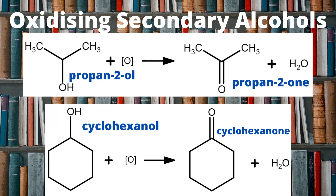Just below the propan-2-ol reacting to form propan-2-one, you can see a cyclic example where cyclohexanol is reacting to form cyclohexanone. Don't be thrown off by the fact that it's cyclic — don't change the ring, leave the ring alone, just change the functional group as described previously. The reaction conditions for oxidizing a secondary alcohol to form a ketone are every time, all the time, a reflux.